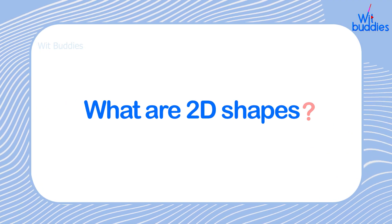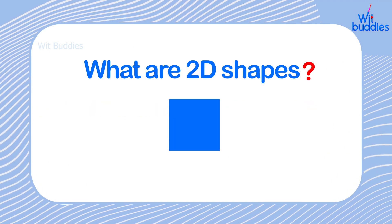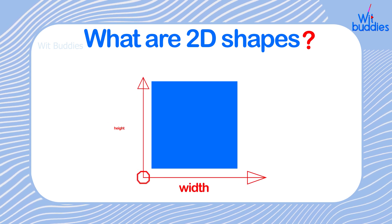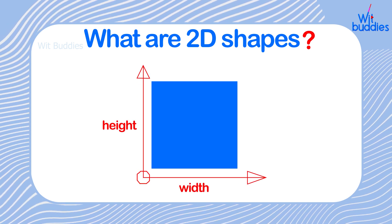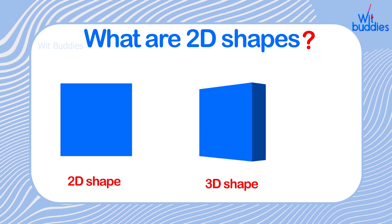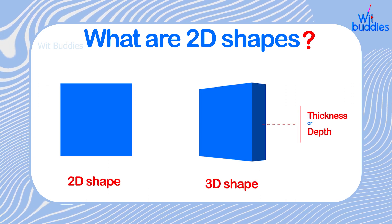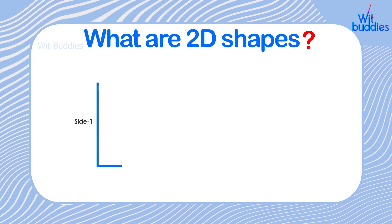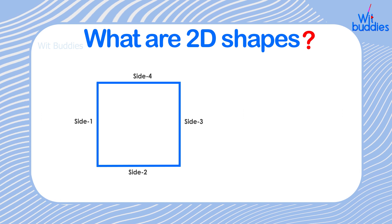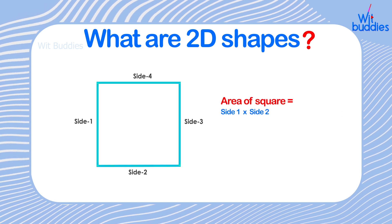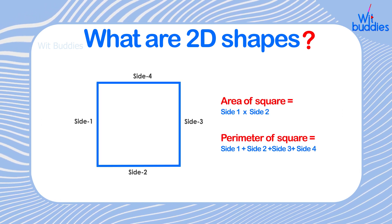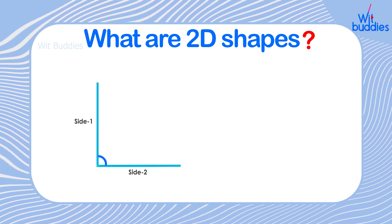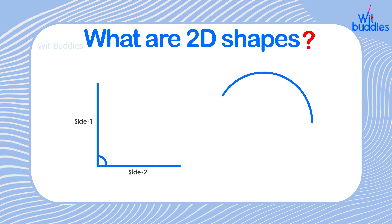What are 2D shapes? 2D shapes are shapes with two dimensions such as width and height. Two-dimensional or 2D shapes do not have any thickness or depth. All the 2D shapes have various parameters such as area and perimeter. Some of the 2D shapes contain sides and corners, whereas some have curved boundaries.